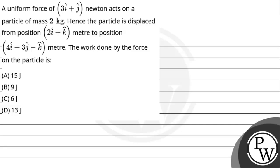Hello, let's head out to questions. Question C. A uniform force of 3 hat I plus hat J Newton acts on a particle of mass 2 kg. The particle is displaced from the position 2 hat I plus hat K meter to position 4 hat I plus 3 hat J minus K meter.